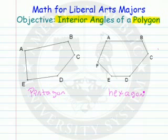And the question is, how many degrees are in all of the interior angles added together? Well, let's see what happens here.